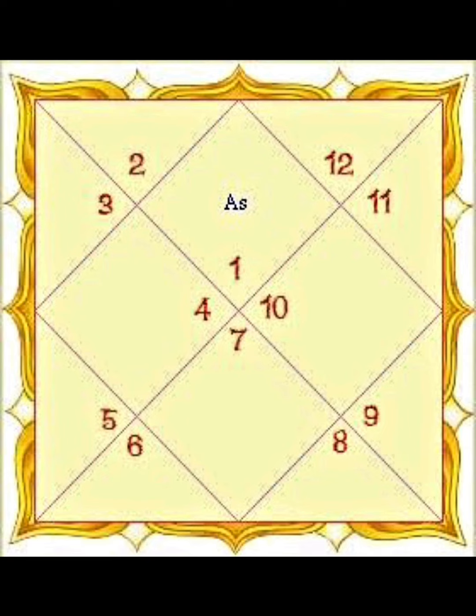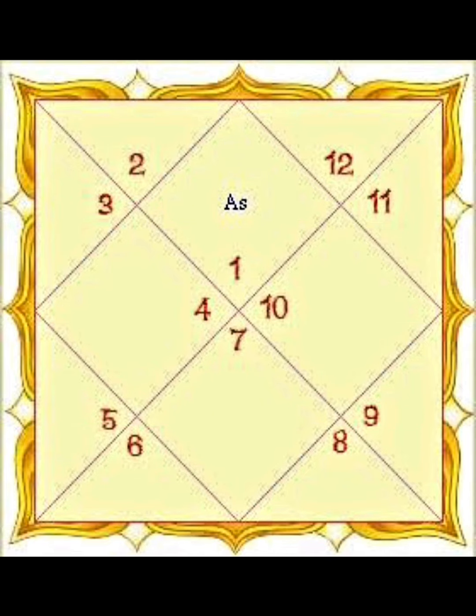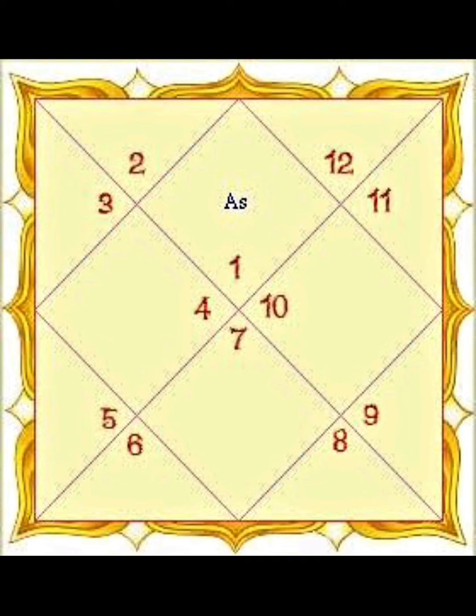The fifth round of transit begins at age 49 and runs through age 60. In this round, we look at further accumulation of wealth, assets, and property, and spiritual inclination also remains an important theme. That is how we read the progression of Jupiter in Bhrigu Nandi Nadi.